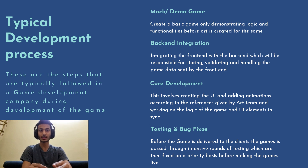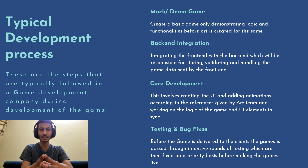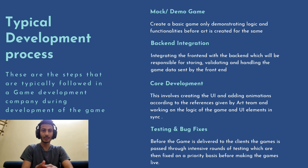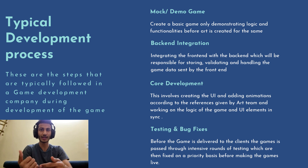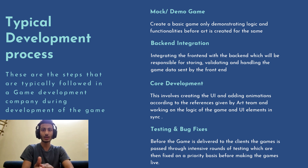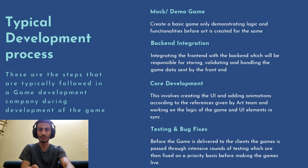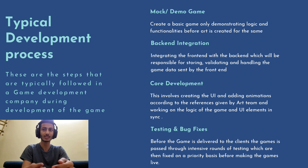The typical development process in a game development company has four stages. First is creating a mock demo game, which generally has the basic logic and functionalities shown to the client before creating the art. Second is back-end integration, which involves integrating the front-end of the game with the backend responsible for storing, validating and handling game data. Third is co-development, which involves creating the UI, adding animations according to art team references, and working on the game logic. Fourth is testing and bug fixes, where extensive testing is done to find and resolve major bugs before the game goes live.